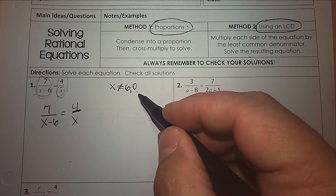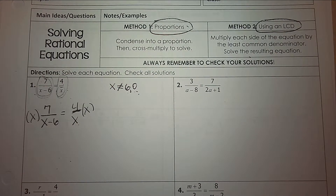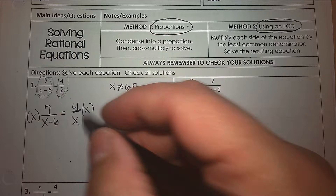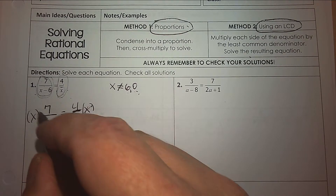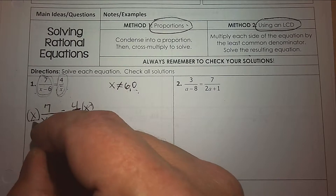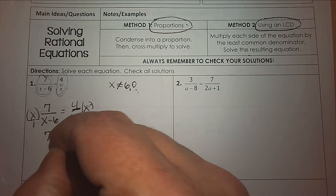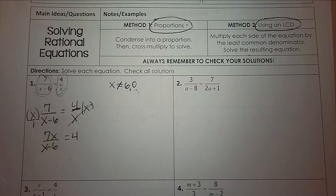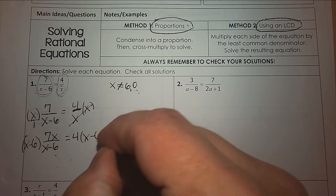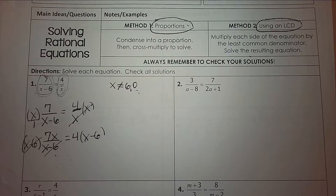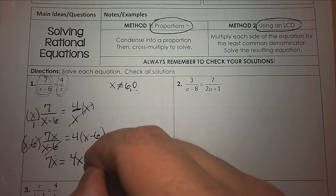First we write down the extraneous solutions — or the excluded values — to double check. The zeros of the denominator: the first denominator gives zero at 6, and for the second it's just 0. So x cannot equal 6 or 0. Because you can't have a zero in the denominator — it makes it undefined. So we multiply both sides by x, the x's strike out, and we're left with 4. Then multiply both sides by x subtract 6, the x subtract 6 strikes out, and we're left with 7x equals 4x subtract 24.